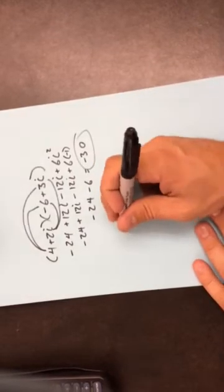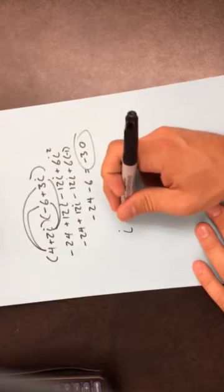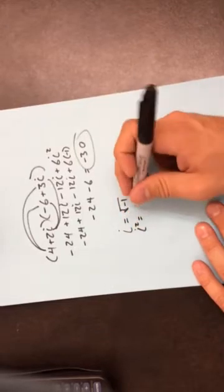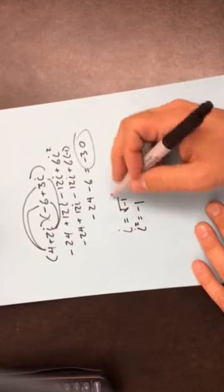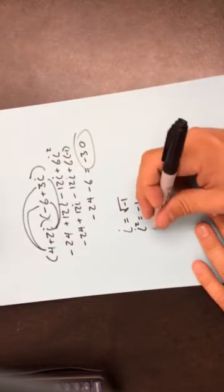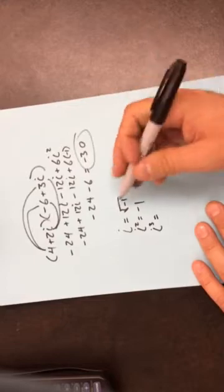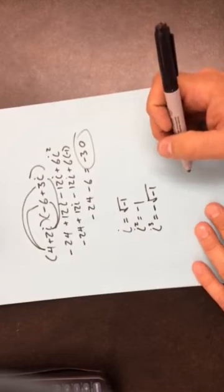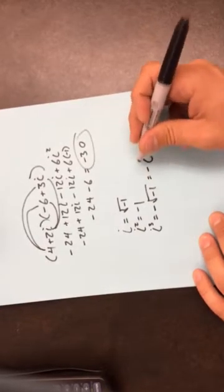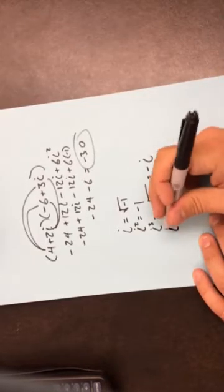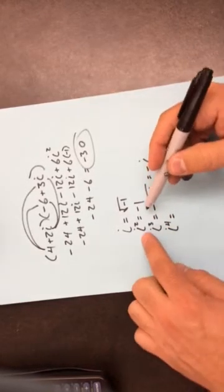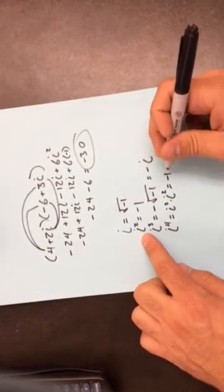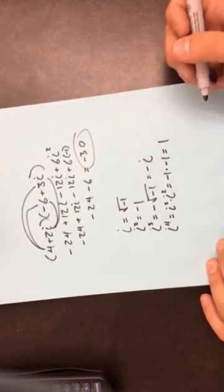What we really need to get used to is the powers of i. i equals the square root of negative 1. i squared equals negative 1 — the square just cancels out the square root. i to the third equals i squared times i, or negative square root of negative 1, which we call negative i. i to the fourth equals i squared times i squared, which is negative 1 times negative 1, equals positive 1.